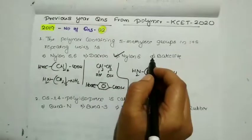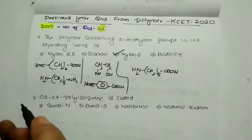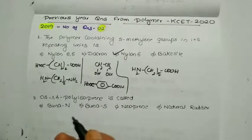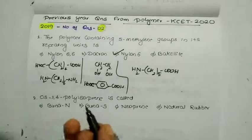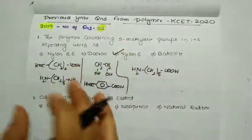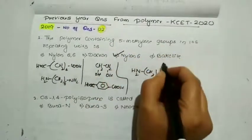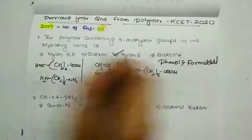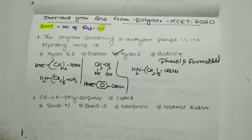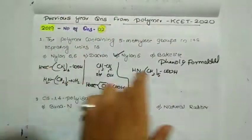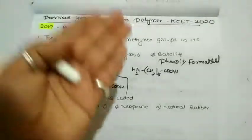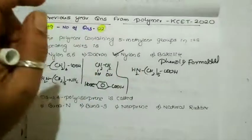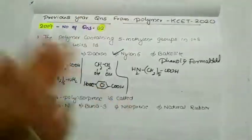Bakelite is a form of resin. You might have heard of Novolac (used in Nerolac paint) and melamine, used for crockery in the kitchen. Bakelite comes under that category and consists of monomers phenol and formaldehyde. So from this first question, I have covered information about Nylon 6,6, Dacron, Nylon 6, and Bakelite. This is how you need to study — once you get the correct answer, you should not leave; you must concentrate on the remaining options as well to cover maximum points.